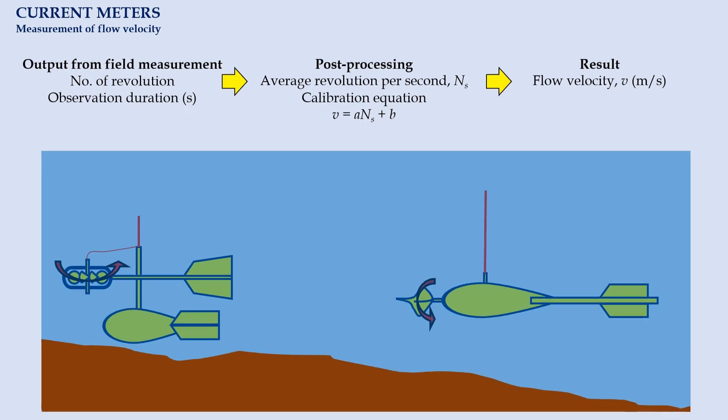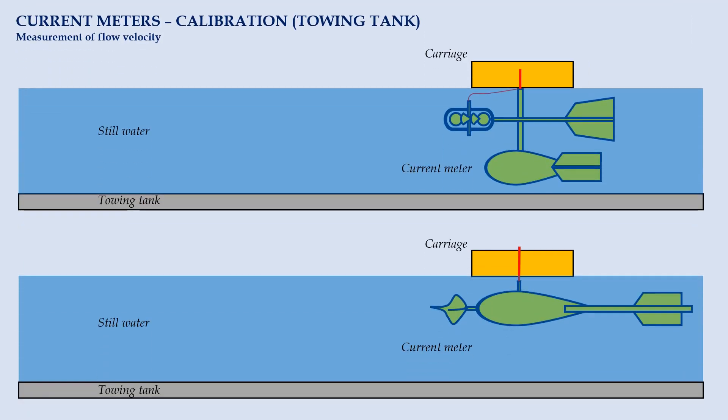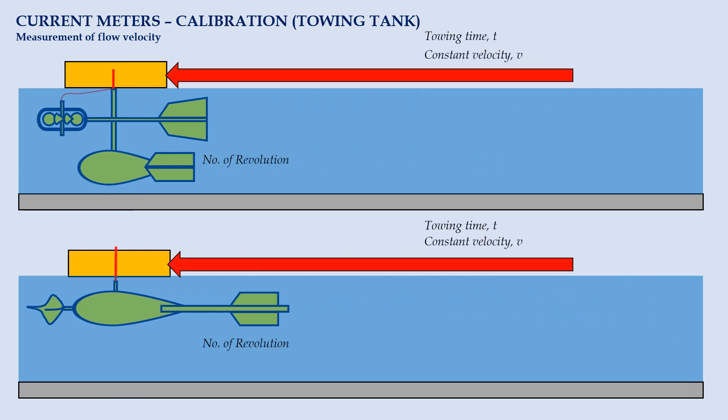A towing tank is used for this purpose. It is a long channel containing still water while consists of a mechanism that moves a carriage over the water surface at constant speed. The instrument is first being mounted to the carriage while making sure the measuring elements, namely cups or propellers, stay immersed in water. Then, the carriage is towed at a constant speed and corresponding average revolutions per second is determined.